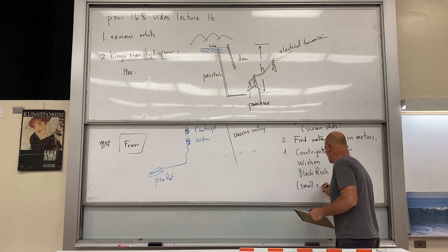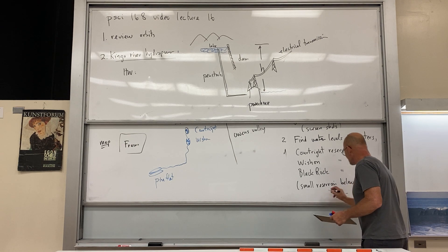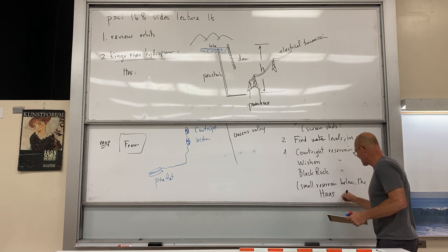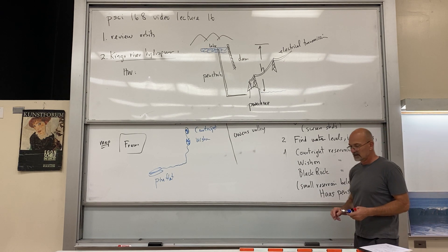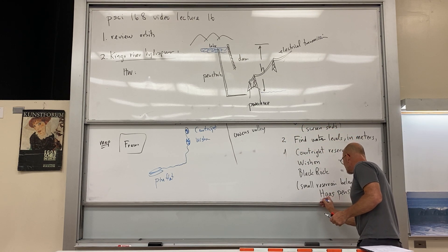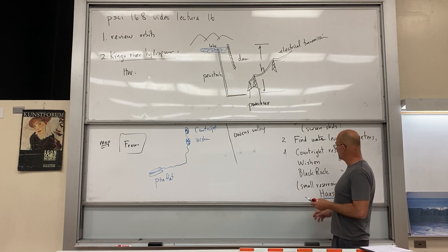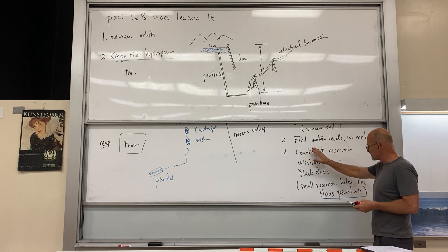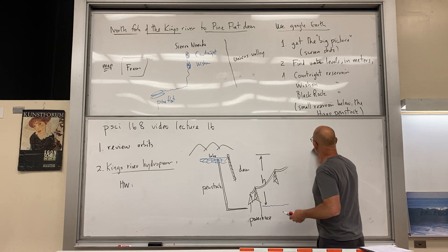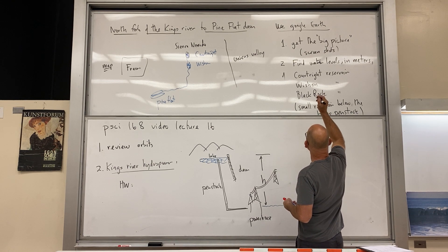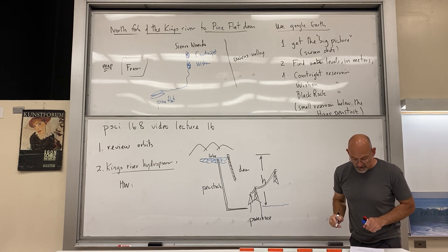See how many we can fit. We can go up there, so Courtright Reservoir, and then Wishon, W-I-S-H-O-N Reservoir, Black Rock, and you guys will pursue these on the map. Then reservoir, there's one whose name I don't know. I'm just going to call it small reservoir below the—and here's what you look up—below the Haas Penstock, H-A-A-S Penstock. I'm going to underline this, so this is what you can look up. It's actually possible to carefully follow these things down the mountainside and down the canyon and discover them all, but if you type these words into the search bar, then it'll take you there. So continuing that list.